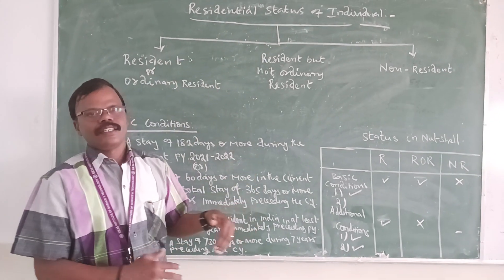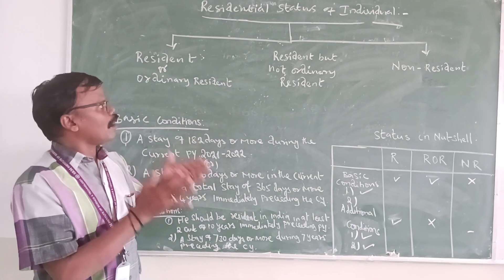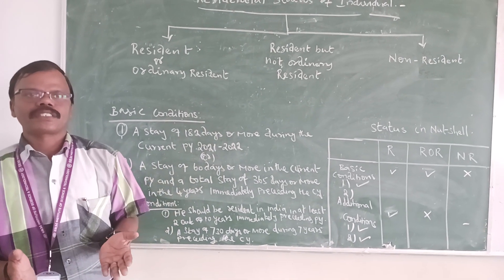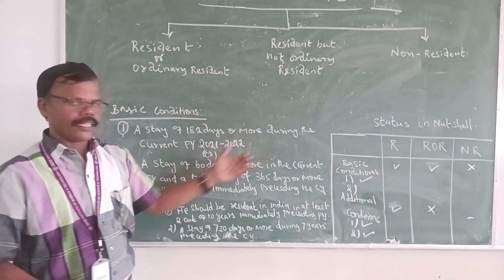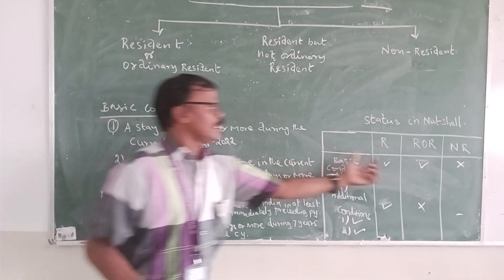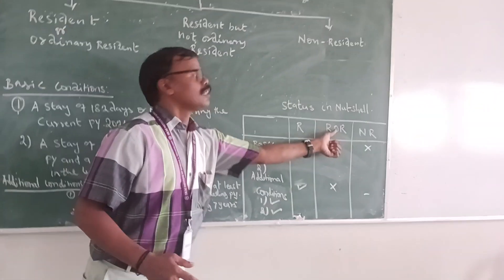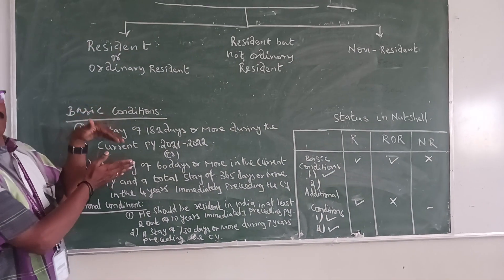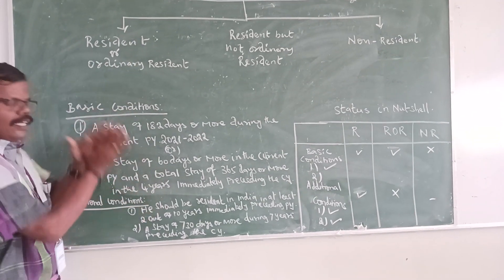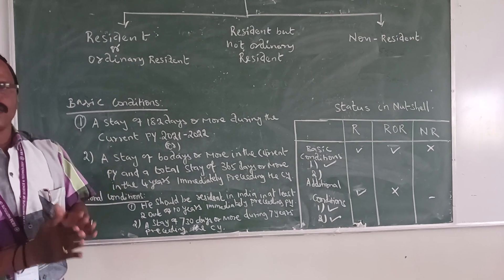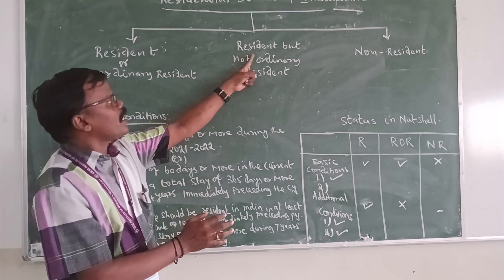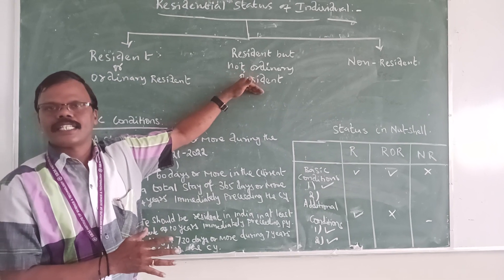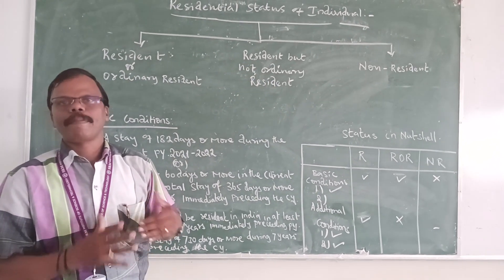Next, a person is Resident but Not Ordinarily Resident in India. The condition is: people who have fulfilled only the basic condition but have not fulfilled the additional condition. That person is called Resident but Not Ordinarily Resident in India. This is the second status of the individual person.